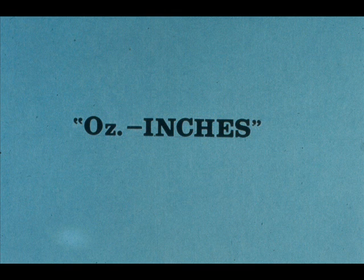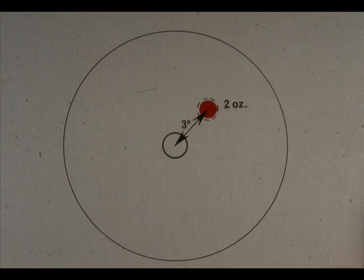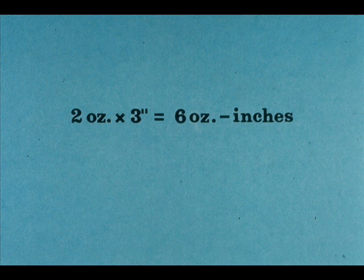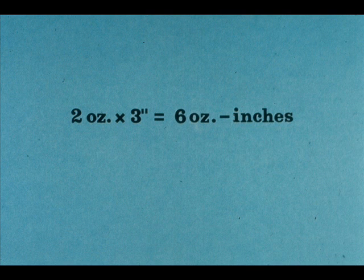Once you find the spot, you must be able to measure its effect. A very common method is ounce-inches. Let's assume that the heavy spot, shown in this rotating assembly, weighs two ounces, and that its position is three inches from the center of the flywheel. To measure the amount of unbalance, we simply multiply the weight times the number of inches. Two ounces times three inches equals six ounce-inches.